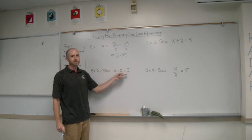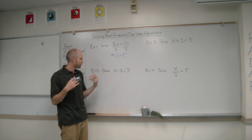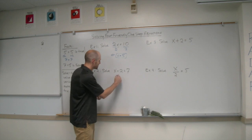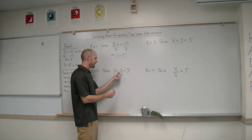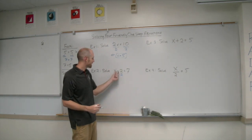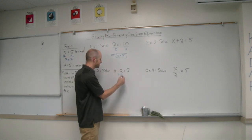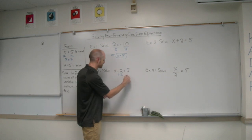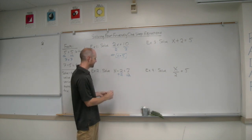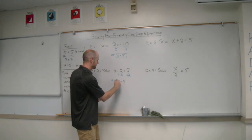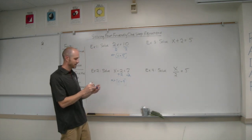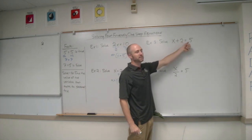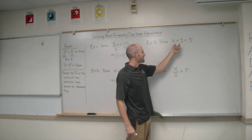Second example: a number minus 2 is equal to 7. The number must be 9. How can we use a property of equality? We use addition — we add 2 here, and negative 2 and positive 2 make zero, isolating x on the left-hand side. The properties of equality say if we're adding 2 to the left-hand side, we must add 2 to the right-hand side as well, giving us x is equal to 9.